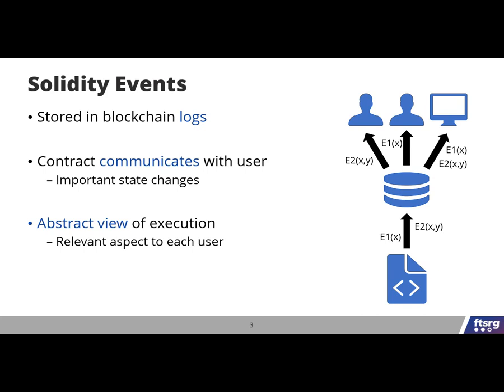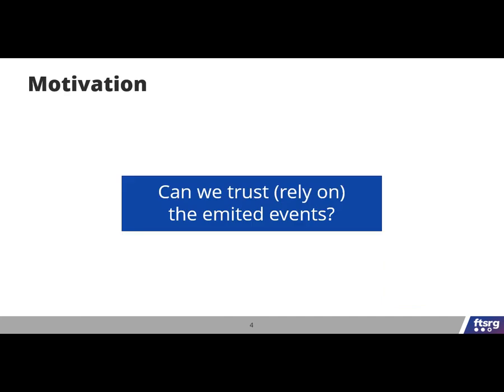Since Ethereum is a public blockchain, users could also run a blockchain node and replay transactions, but this would often give too much detail. So instead, events can provide an abstract view of the execution — only the relevant aspects for each user. The big question is: can we trust these emitted events? Can we rely on them in the sense that the abstract view is consistent with the internal execution and internal state of the contract?